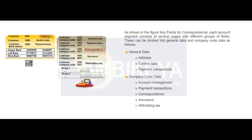Accounting Clerk: The Accounting Clerk field is the name that can be used for correspondence, for example while sending open item lists. Account Number at Customer: The Account Number at Customer field holds the account number that the customer uses for your company code.